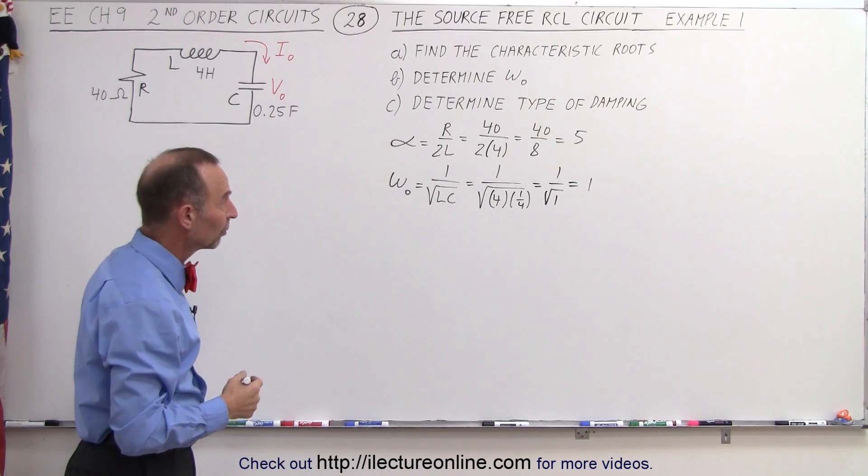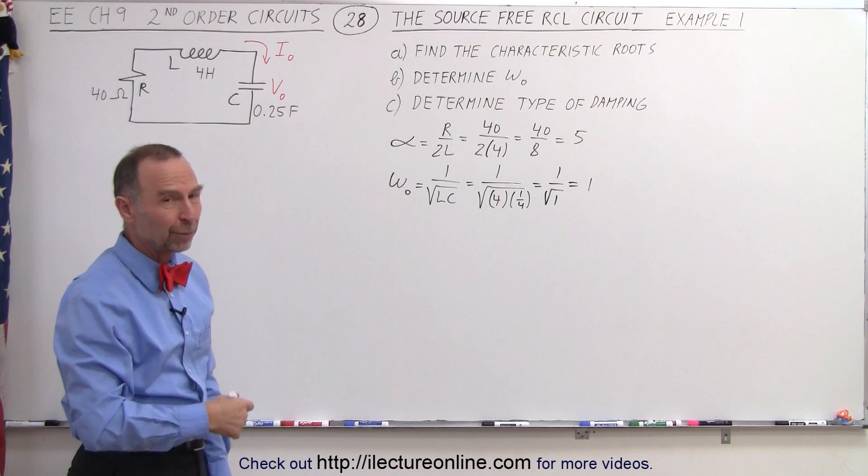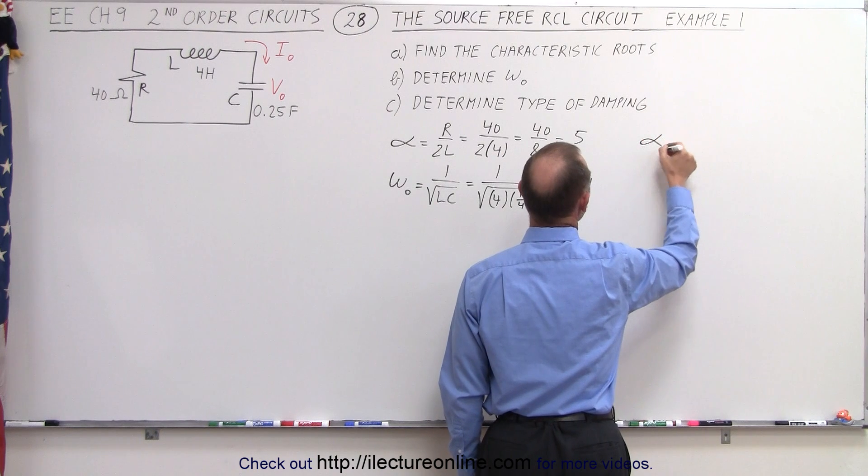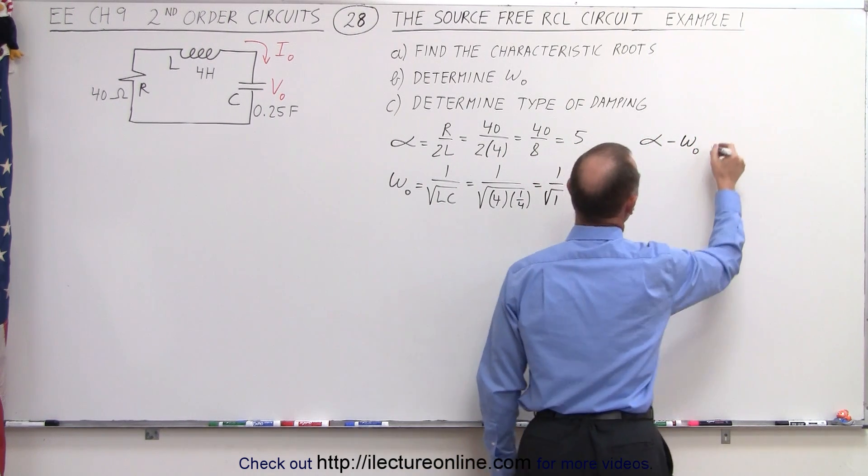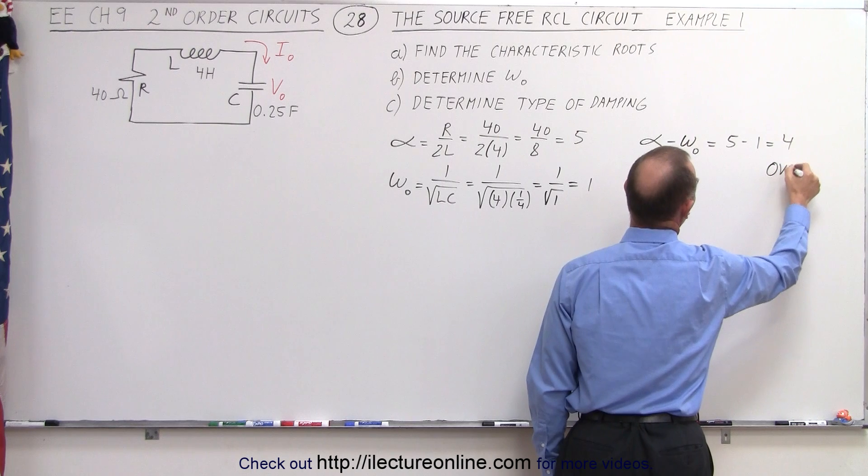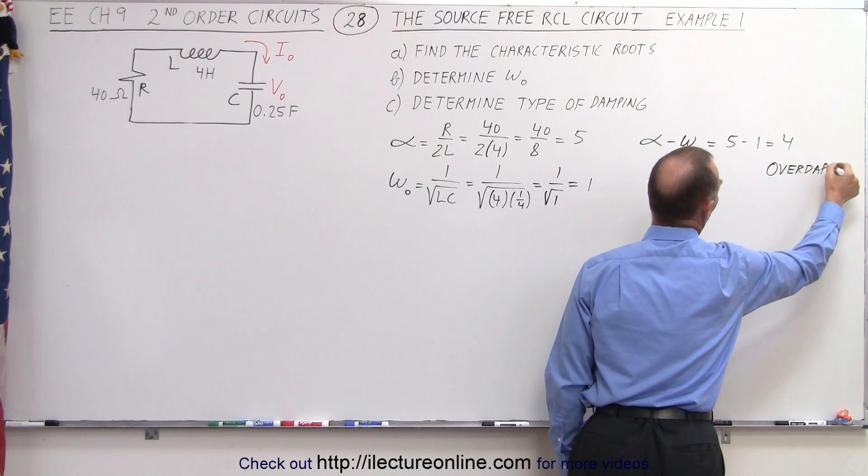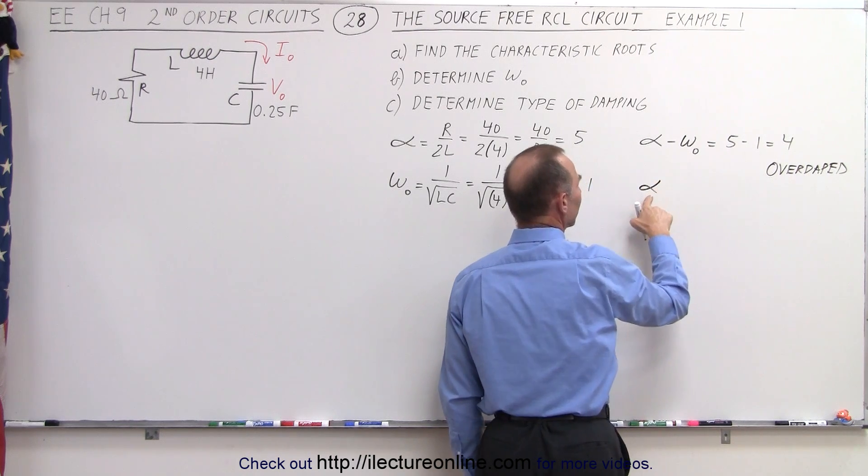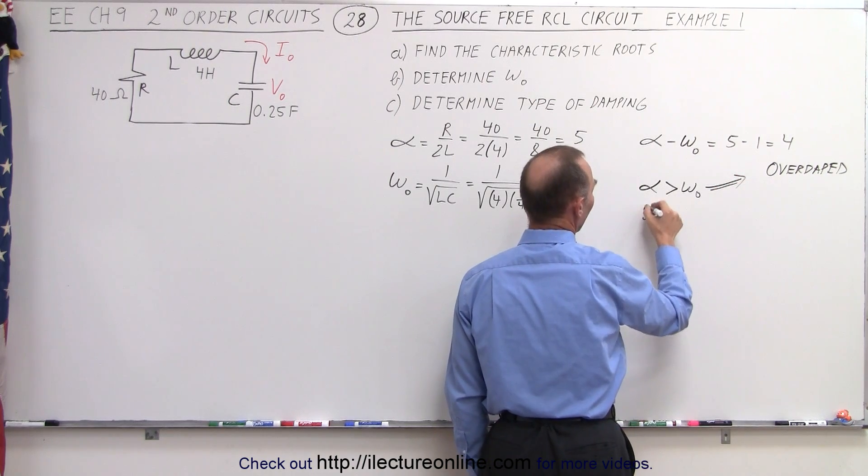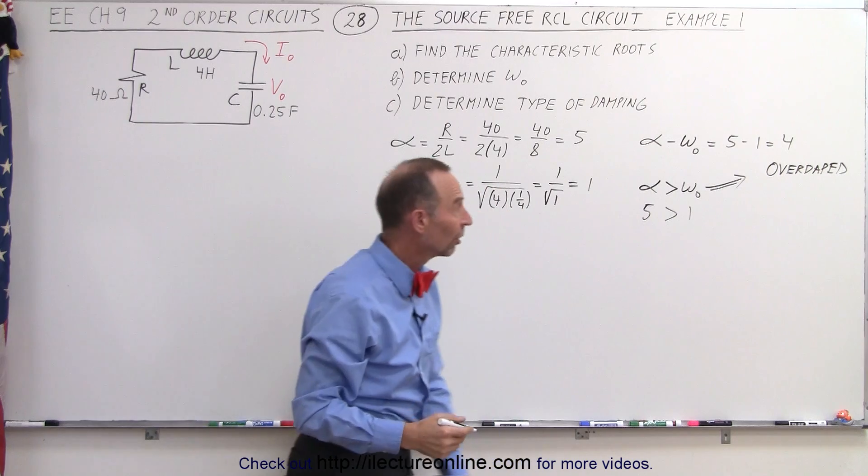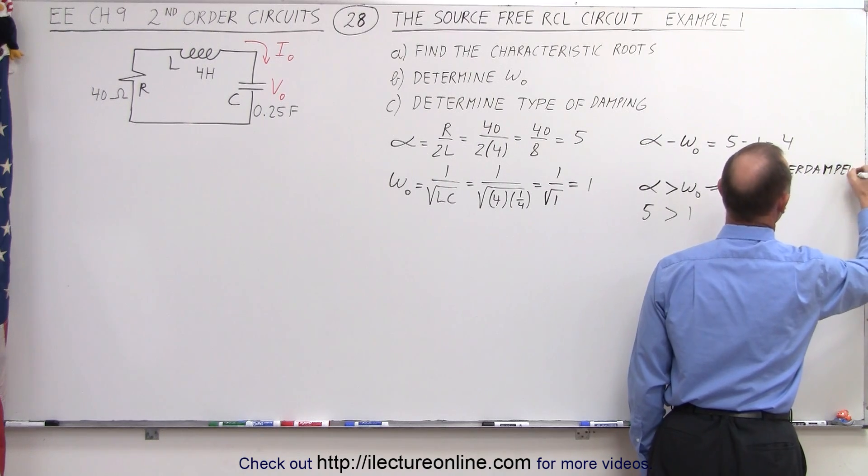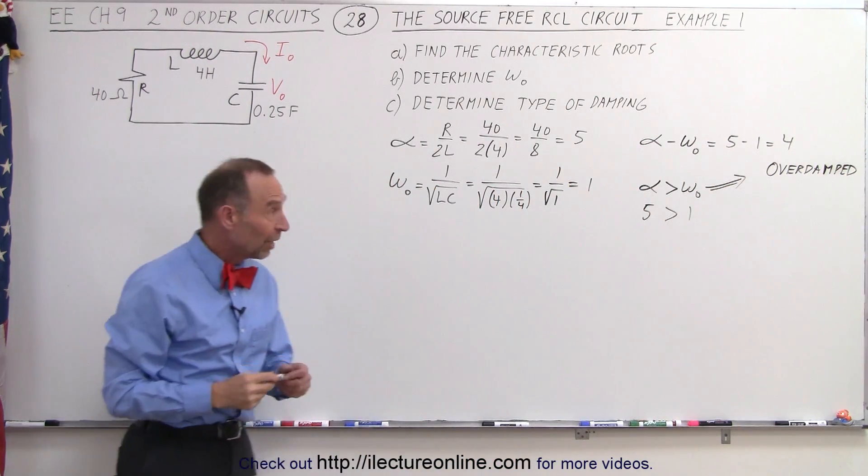Now we can determine whether or not there is critical damping, over damping, or under damping by comparing those two to one another. Let's find the difference between the damping factor and the natural frequency. So in this case that is 5 minus 1 which is 4. Since it's positive that means it's overdamped. Another way of looking at that is to realize that if the damping factor is greater than omega sub-naught, that also indicates over damping. In this case 5 is greater than 1 so we know that yes it's overdamped. And I think I forgot something damped. I forgot an M. There we go, that looks a little bit better.